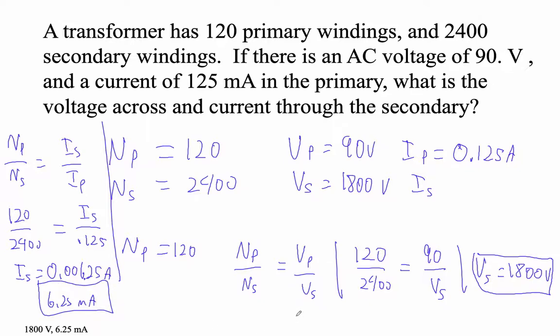Now, another way you can do that power is just do IV as IV. So I can say that in the primary, it's 0.125 amps times 90 volts is equal to I secondary times 1800 volts. And then I can go 0.125 times 90 divided by 1800.